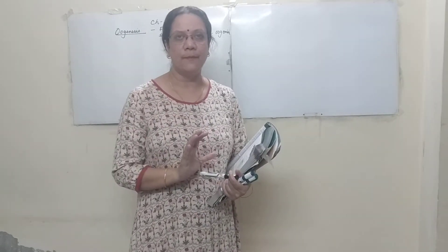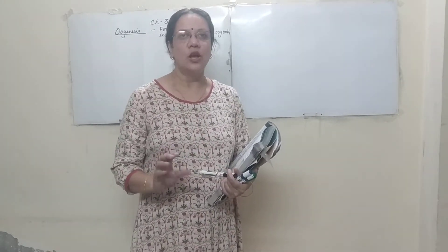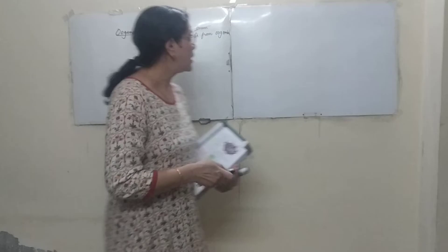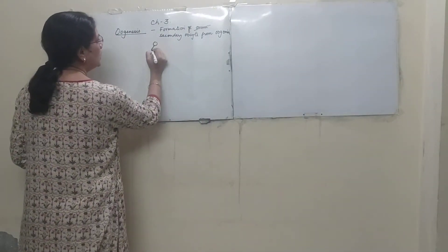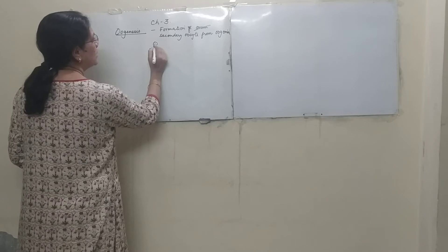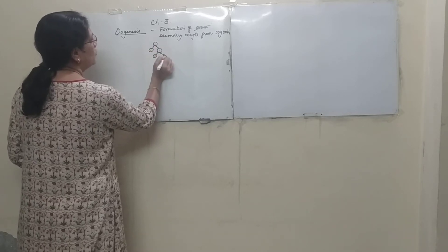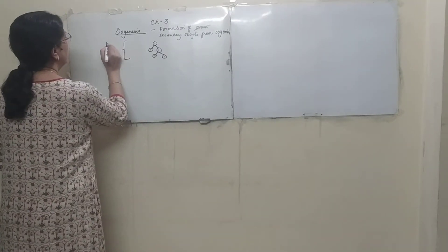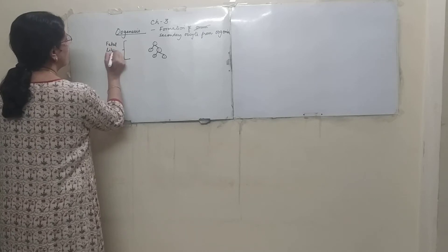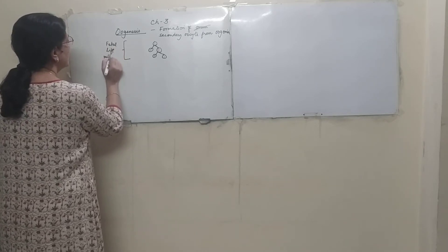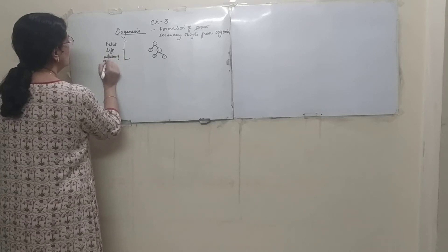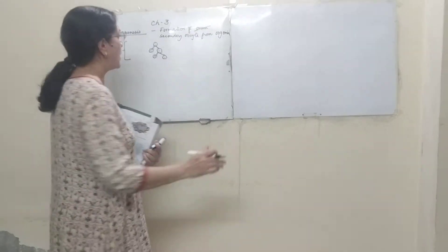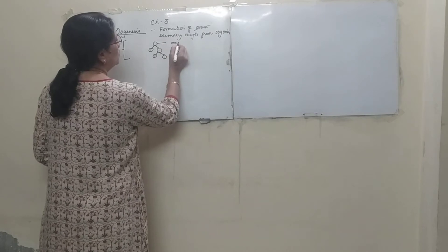During fetal life, there are about millions of oogonia present in each ovary. This number doesn't change — new oogonia will not be added after the birth of the child. During fetal life, due to mitotic division, oogonia kept on dividing to form millions of oogonia in each ovary.